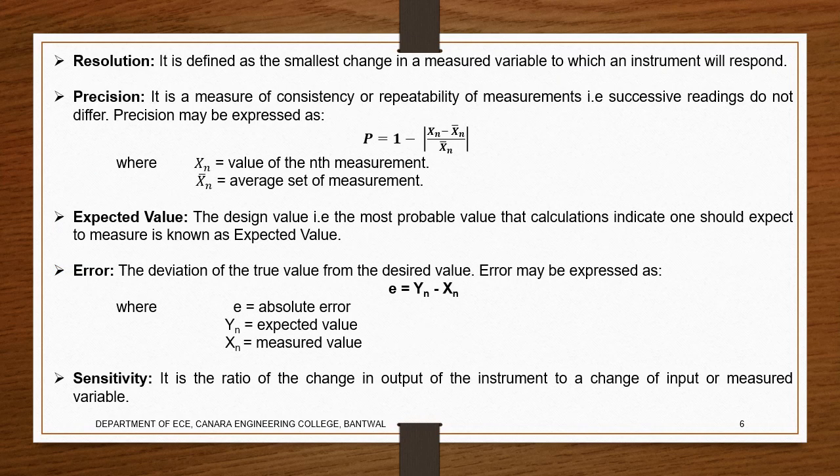Next we will look into the concept of resolution. With respect to an instrument, resolution is nothing but the smallest change in the measurable variable to which the instrument will respond. It is the smallest change — if we have a value of 1 and then 1.1, the instrument has to respond to it. It does not mean that when we input 1 volt the instrument does not respond to 1.1 — it also has to respond to 1.2. The smallest change in input through which the instrument starts to give a response, we say it as output, is called resolution.